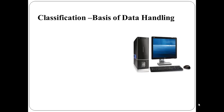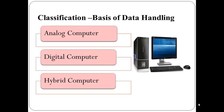The first type of classification is based on data handling. There are three different types of computer: analog computer, digital computer, and hybrid computer.